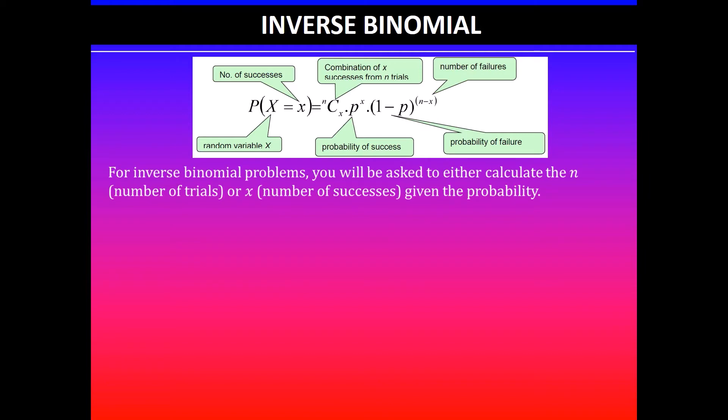For inverse binomial problems you'll be asked to either calculate the n value, which is the number of trials, or the x value which represents the number of successes for a given probability.